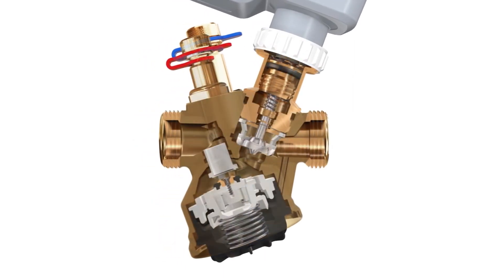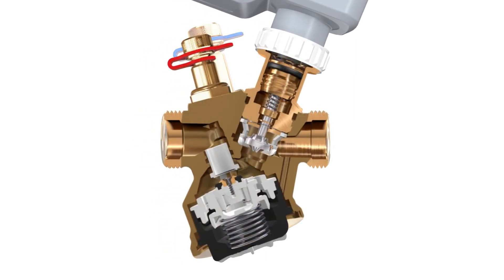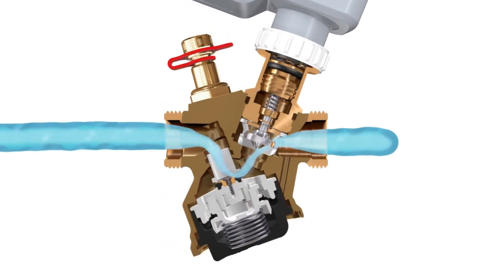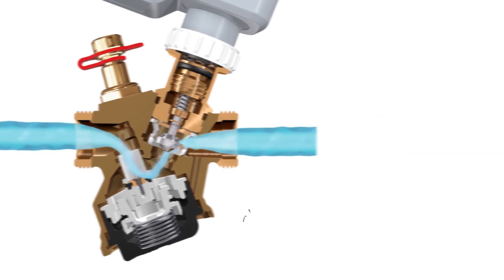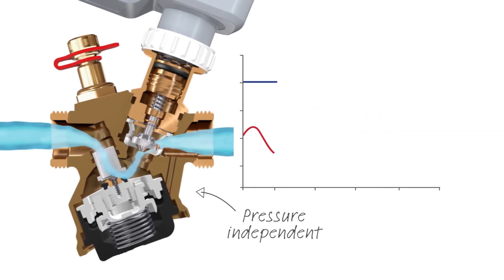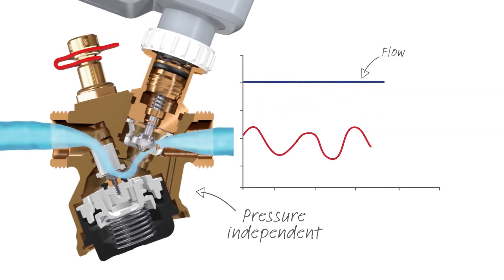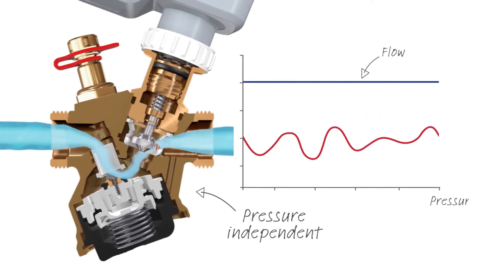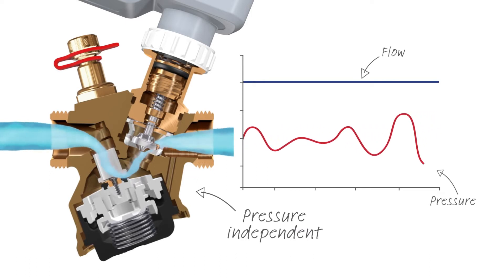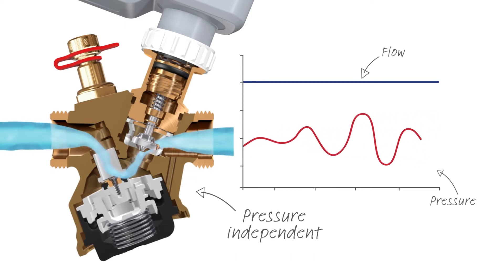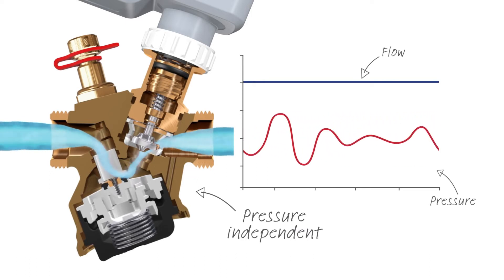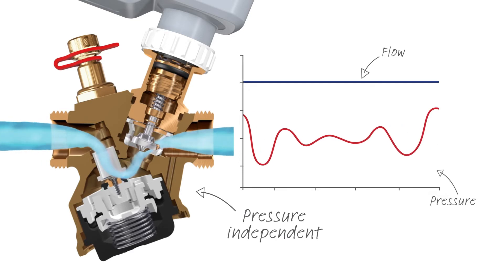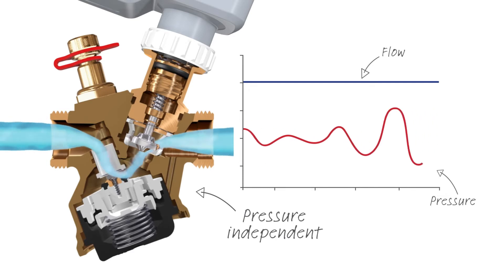The built-in pressure controller limits the maximum flow through the valve when the actuator is fully open. TA Modulator is a pressure independent valve — it keeps the flow constant regardless of pressure fluctuations in the system and guarantees high control authority.